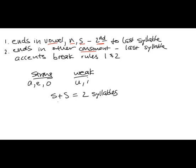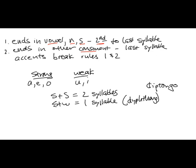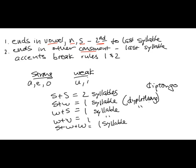If, on the other hand, you have a strong vowel right next to a weak vowel — let's say you had an A and an I together — that would only be one syllable. This is called a diphthong, or diptongo in Spanish. Likewise, if you have a weak vowel right next to a strong vowel, let's say a U and E, that also would be only one syllable — also a diphthong. Or if you had two weak vowels right next to each other, one syllable. Or in some cases, strong, weak, weak all next to each other — that is also only one syllable. Those are diphthongs: two or more vowels that create only one syllable.